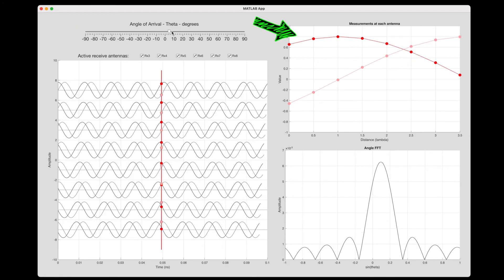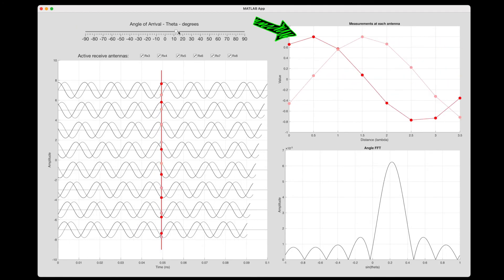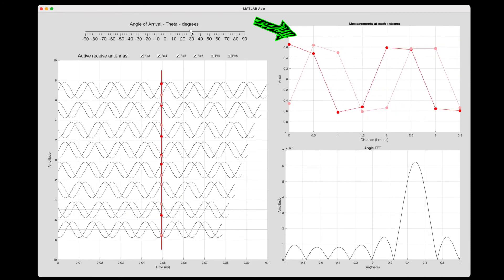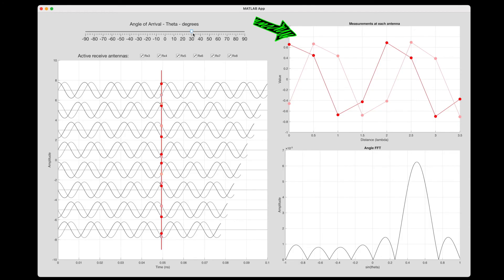And notice as I increase theta, these IQ signals from the antennas trace out a sine wave with increasing spatial frequency. And it's this relationship between theta and spatial frequency that we can exploit. Because now we don't have to fiddle around with phase shifts and distances, we can calculate the angle to the object based on this spatial frequency. The faster it is, the larger the angle to the object.